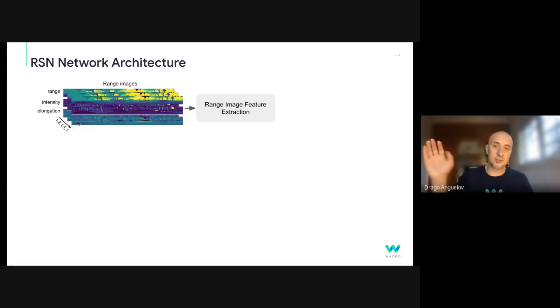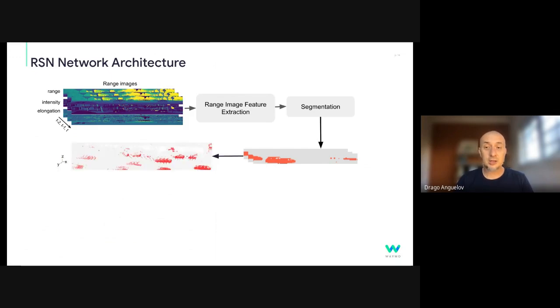So as the sensor is spinning, it keeps capturing and drawing this range image. So we process the range images themselves and extract features. And we also segment the foreground objects of interest in these range images. This selects maybe 10% of the points, in many cases, of what could be objects of interest. And then we project these points, just the foreground points, in 3D, in bird's eye view.